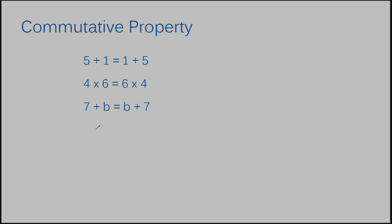Let's look at this third example. We have a variable in our problem, but that does not change a thing. It still works as a commutative property example because seven plus B is going to be equal to B plus seven. B has to be the same thing both times. Let's say B is three — I would have seven plus three, which is ten, and three plus seven, which is also ten. So it doesn't matter the position; this even applies when you're dealing with variables.